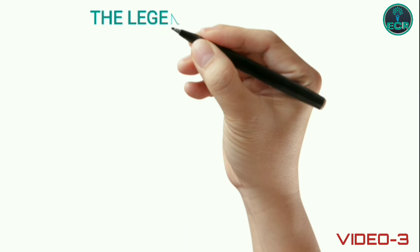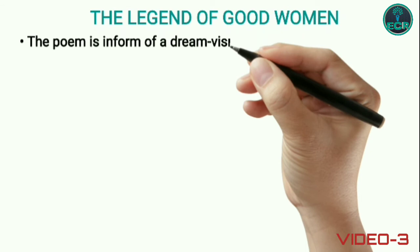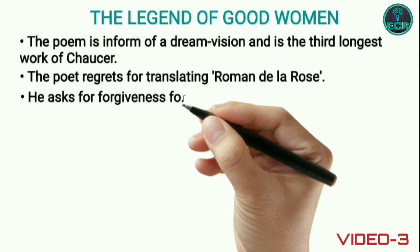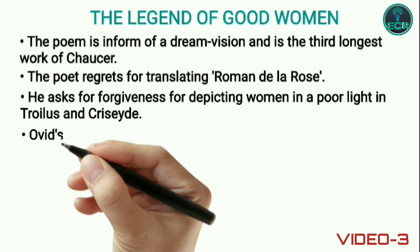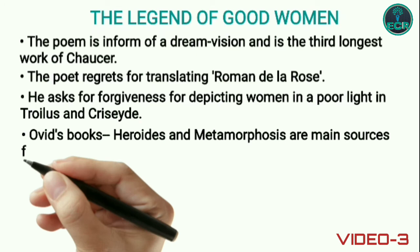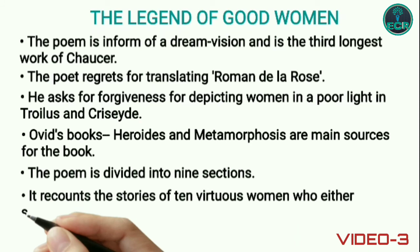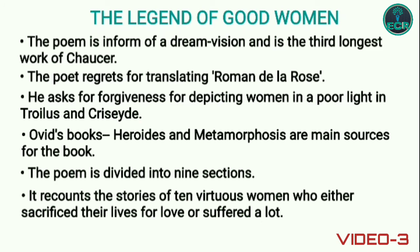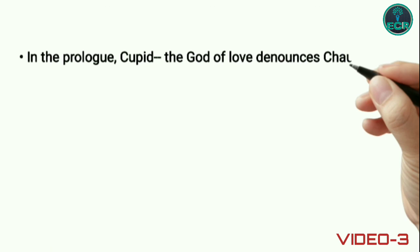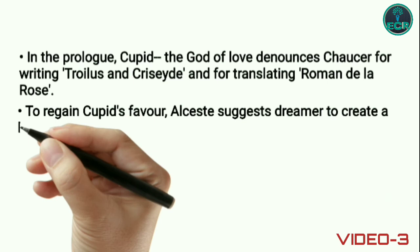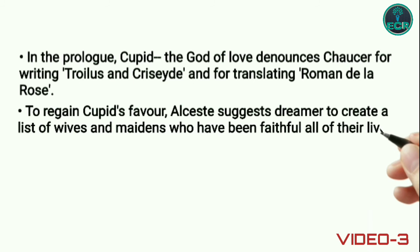Next is The Legend of Good Women. The poem is in the form of a dream vision and is the third longest work of Chaucer. The poet regrets for translating Roman de la Rose. He asks for forgiveness for depicting women in a poor light in Troilus and Criseyde. Ovid's books Heroides and Metamorphoses are main sources for the book. The poem is divided into nine sections and recounts the stories of ten virtuous women who either sacrificed their lives for love or suffered a lot. In the prologue, Cupid, the god of love, denounced Chaucer for writing Troilus and Criseyde and for translating Roman de la Rose. To regain Cupid's favor, Alceste suggests Chaucer to create a list of wives and maidens who have been faithful all of their lives.